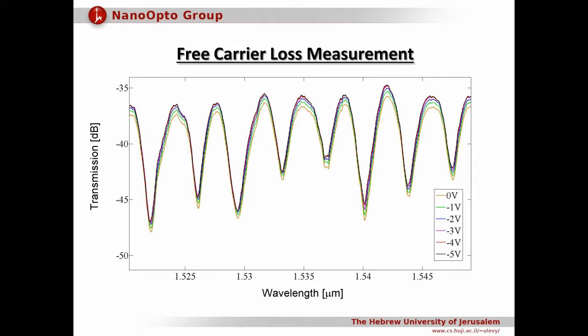By combining the spectral shift with the loss measurements we found the figure of merit of our device, defined as VπL multiplied by the loss per unit length, to be as low as 5 volt dB, which is about three times better than previously demonstrated devices.